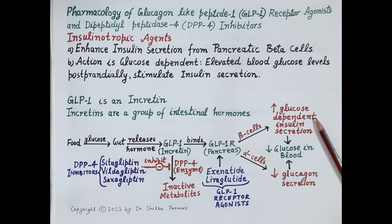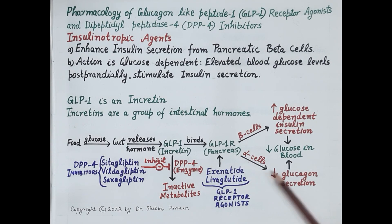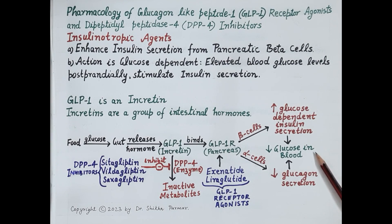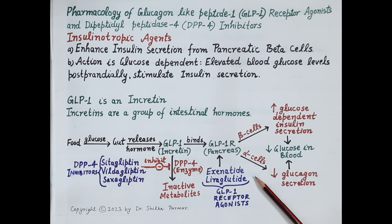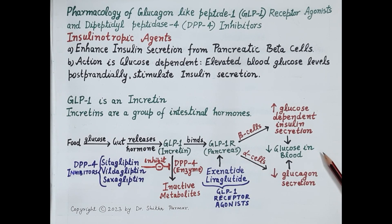In addition to this, GLP-1 by binding to GLP-1 receptors inhibits release of glucagon from the alpha cells, and this also reduces levels of glucose in the blood. GLP-1 receptor agonists, namely exenatide and liraglutide, bind to GLP-1 receptors on the pancreas and reduce postprandial and fasting glucose levels in the blood. Therefore these drugs are used in the treatment of type 2 diabetes mellitus.